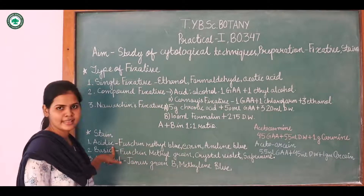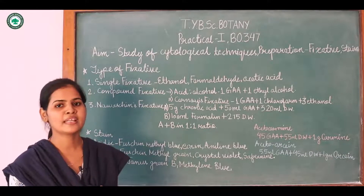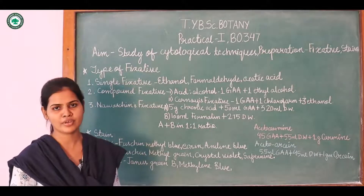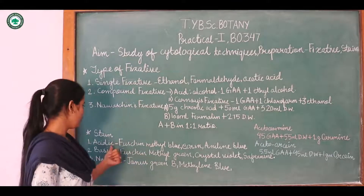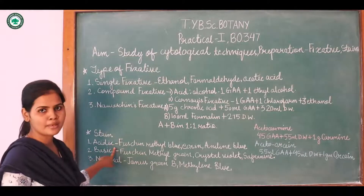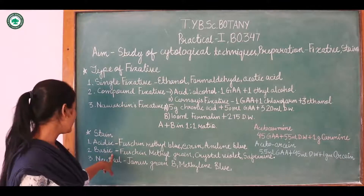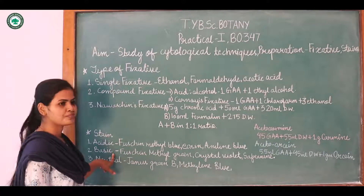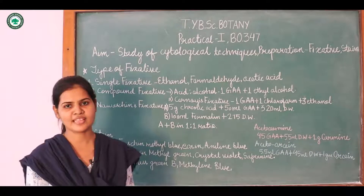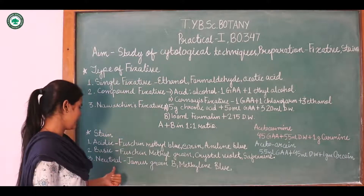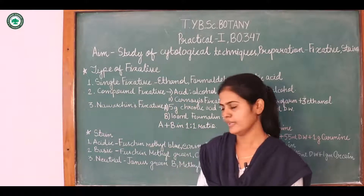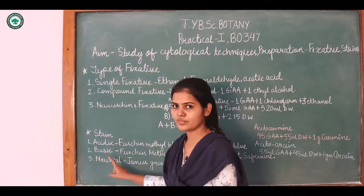In the case of acidic stain, the chromophore material is an anion and it will stain the basic component of a cell, like the cytoplasm. In the basic stain, the chromophore is a cation and it will stain the acidic compartment of a cell, that is the nucleus. In neutral stain, the chromophore can be both cation and anion.